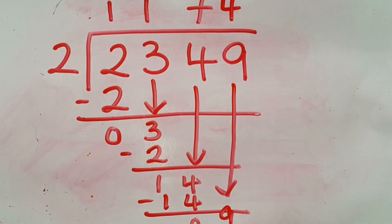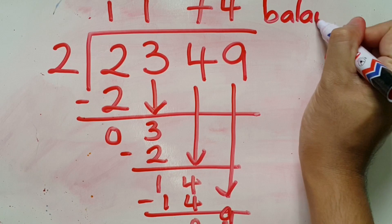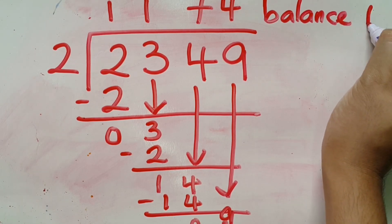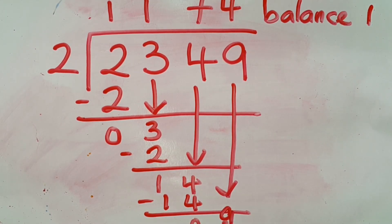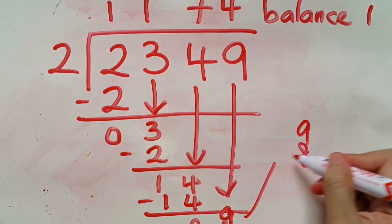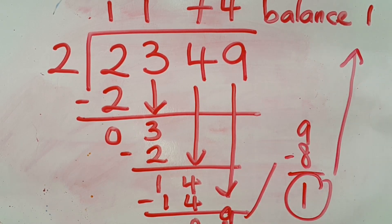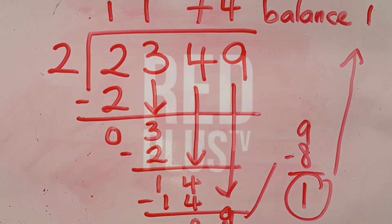Now drag nine down to the bottom. Four times two is eight, so nine minus eight leaves a balance of one. The remainder is stated at the end of the total. So there you have it — we get one thousand one hundred and seventy-four, with a balance of one.